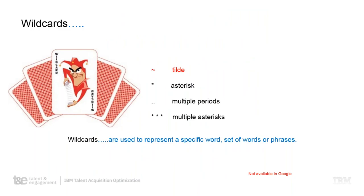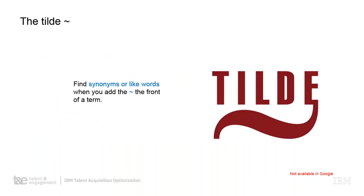Wildcards are fun and can be a little tricky to play with. We have the tilde, the asterisk, multiple periods, and multiple asterisks. These are used to represent a specific word. Please note: the tilde is not available in Google — you cannot use it in Google, it will not work. But we're going to talk about it first.